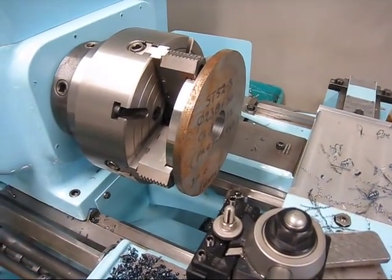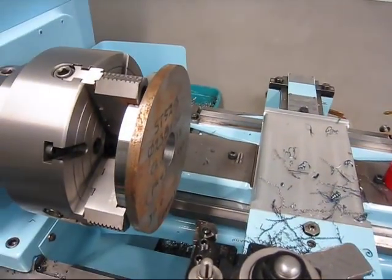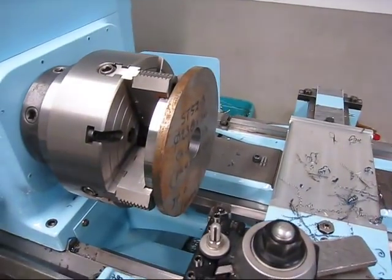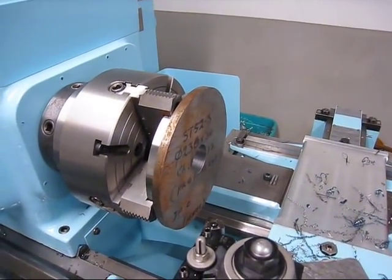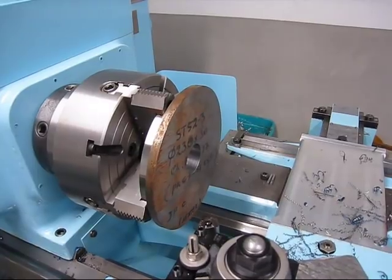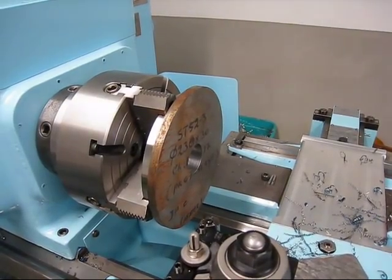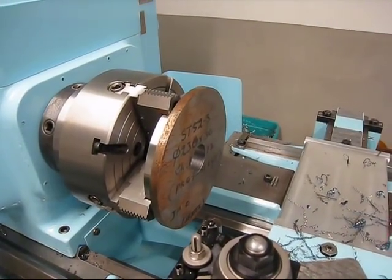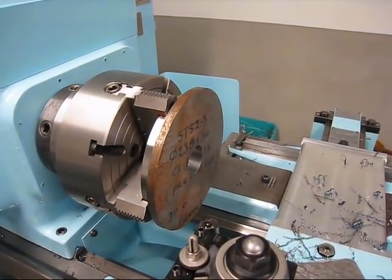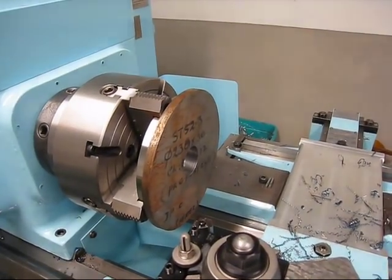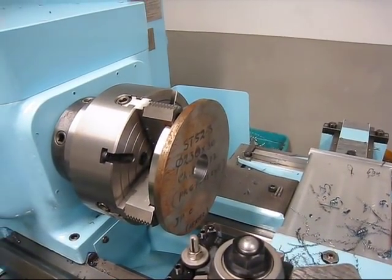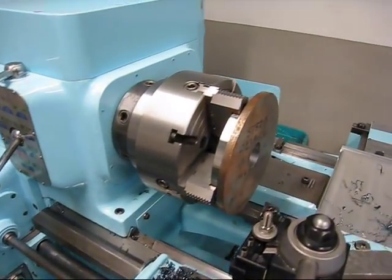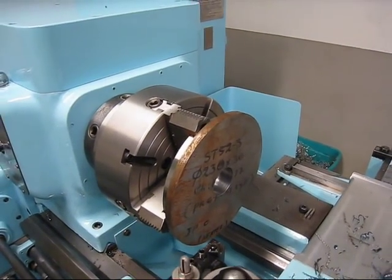Let's see about the cutting data here. Iranian Iskar CNMG insert, 0.8 nose radius, running about 140 meters per minute or 460 surface feet. The feed is almost 16 thousandths per rev, that's 0.4 millimeter. The depth of cut is 150 thou or 1.9 millimeter, so we're taking off 3.8 millimeters in each cut.